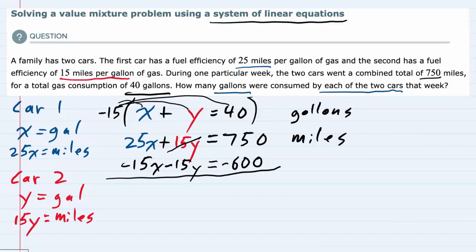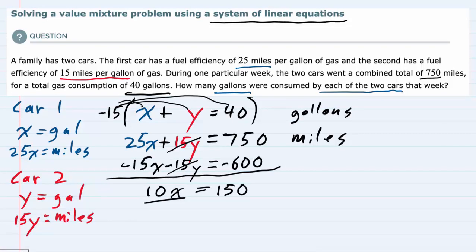the 15y and minus 15y cancel. When we add the left-hand side, 25x minus 15x gives me 10x. On the right-hand side, 750 minus 600 gives me 150. I can then divide both sides by 10, and we have x equals 15.